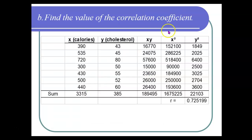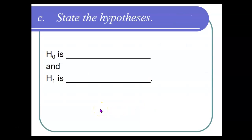Step B: find the correlation coefficient. Using the formula, Excel, a graphing calculator, or similar, it comes out to be approximately 0.725. Step C: state the hypotheses — always the same. The null hypothesis is rho equals zero and the alternative hypothesis is rho does not equal zero.